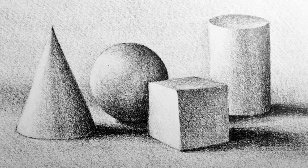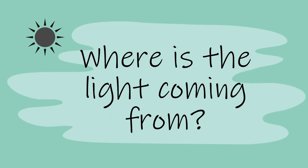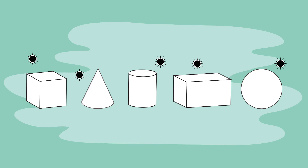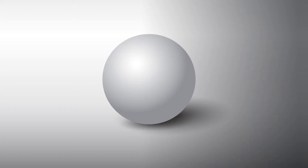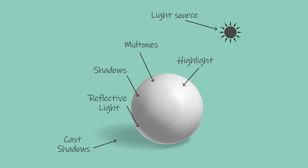The next technique is value, which is created with shading. When you need to create an illusion of 3D with value, it is important to first identify your light source. If you are working from a reference, ask yourself where is the light coming from. If creating forms from your mind, you need to decide what angle the light source is coming from. If you know where the light source is, you can work out where the shadows and highlights should be, and that will help you create the illusion of form.